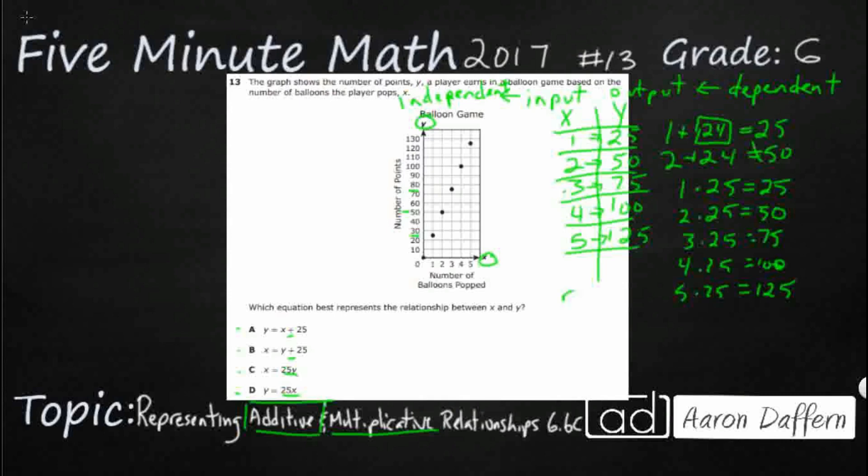So our rule is times or multiply 25, but the problem is our answers don't look like that. Our answers look like this. So this is where we can plug it in. Let's try our multiplicative options first. Since we already said the addition doesn't work, we can get rid of A and B.